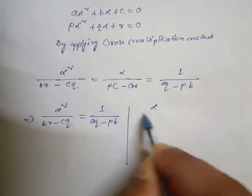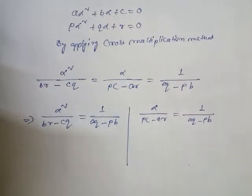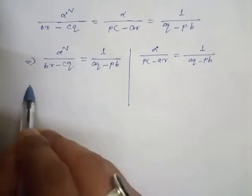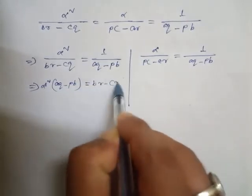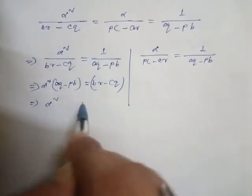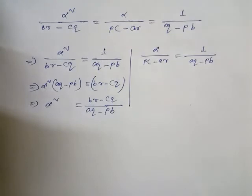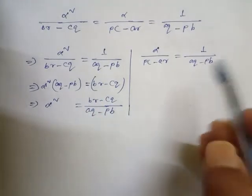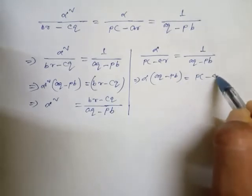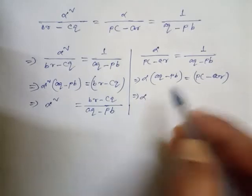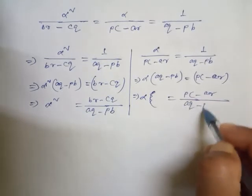Comparing the first and third ratios: alpha² / (br − cq) = 1 / (aq − pb), giving alpha² = (br − cq) / (aq − pb). Comparing the second and third ratios: alpha / (pc − ar) = 1 / (aq − pb), giving alpha = (pc − ar) / (aq − pb).